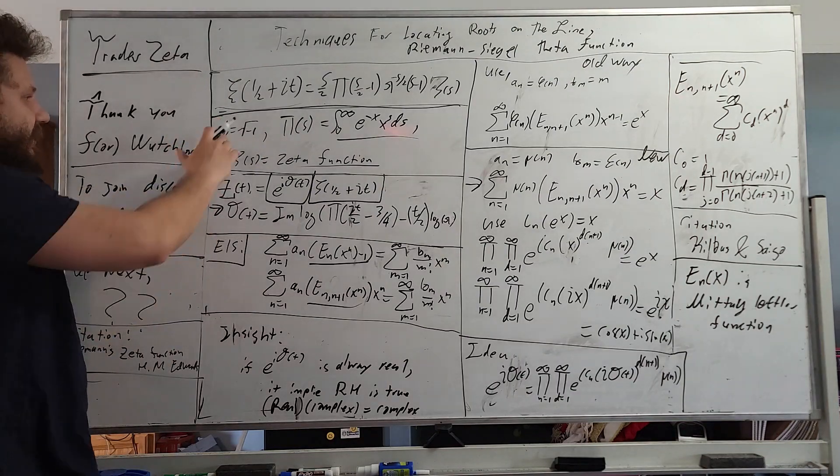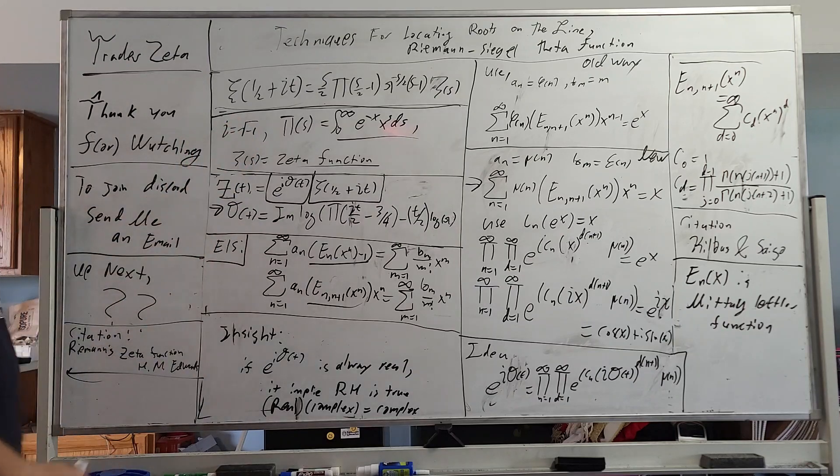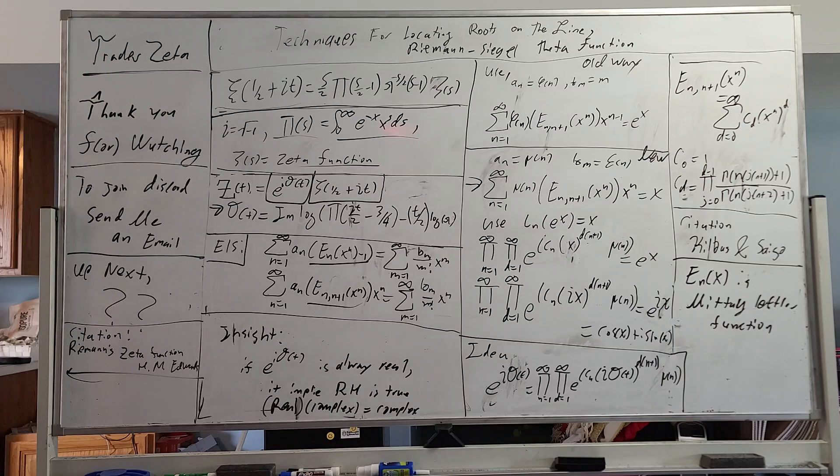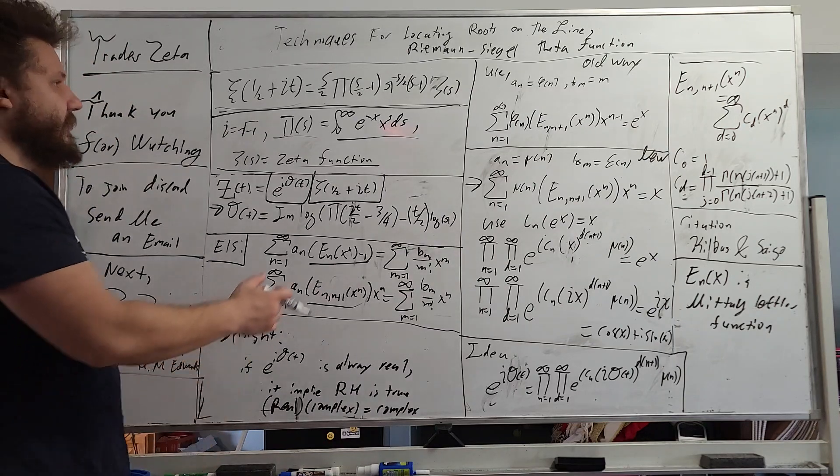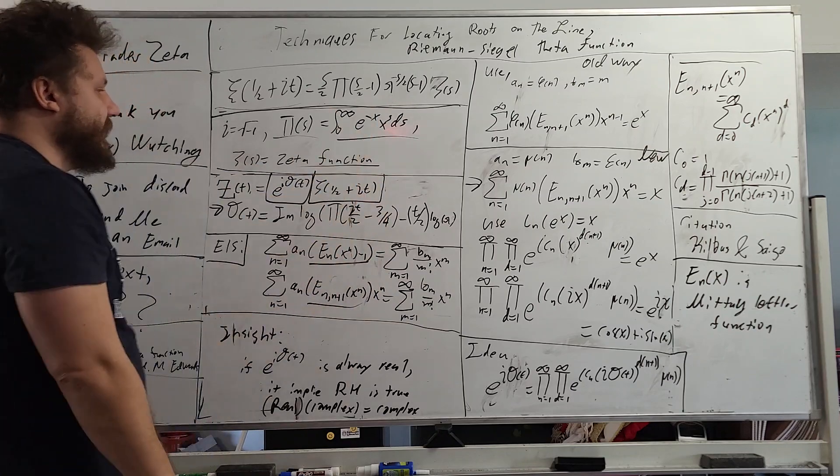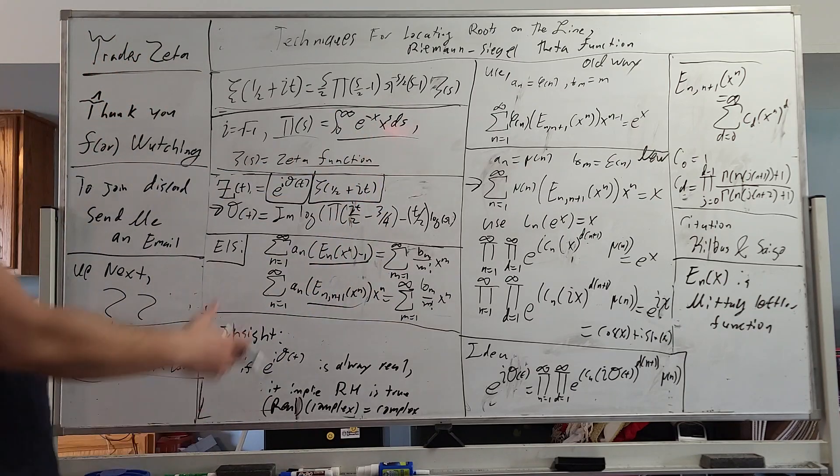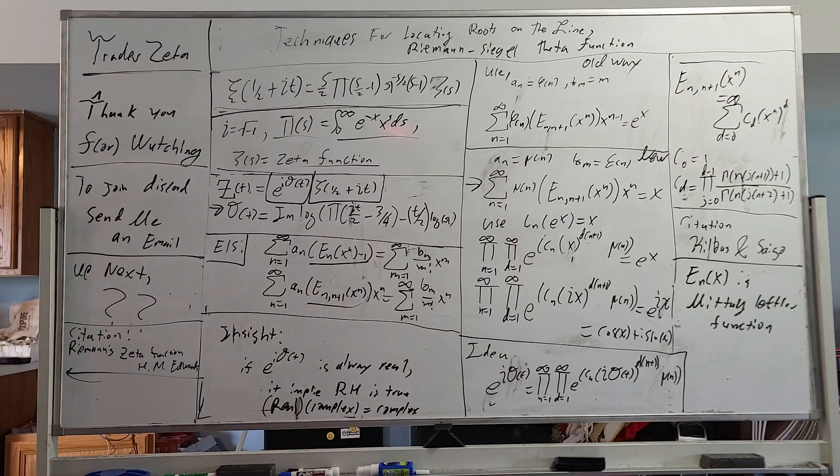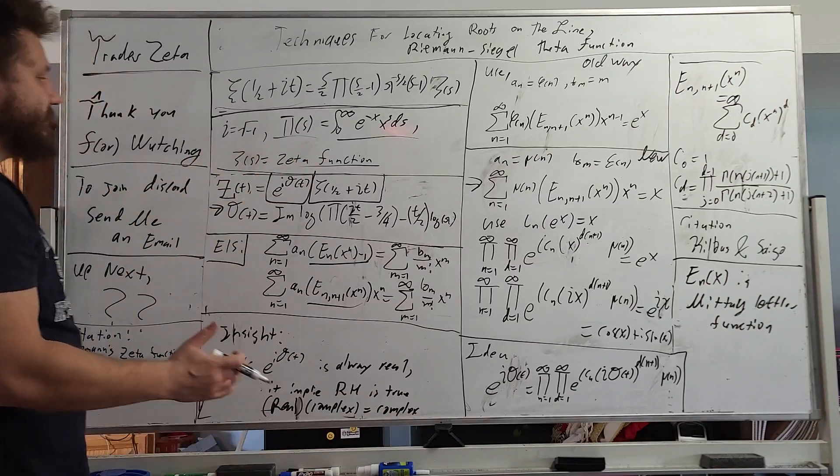So i is the imaginary, equals square root negative one, and this Euler's function right here is very close to the gamma function. In fact, it's just one over. We use notation that's consistent with this book, and Zeta of s, of course, is the Zeta function.